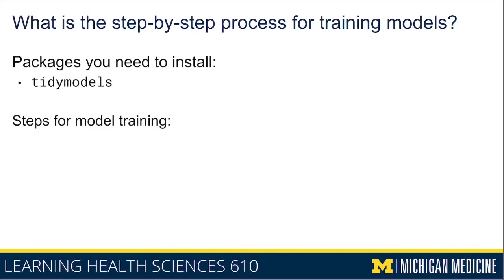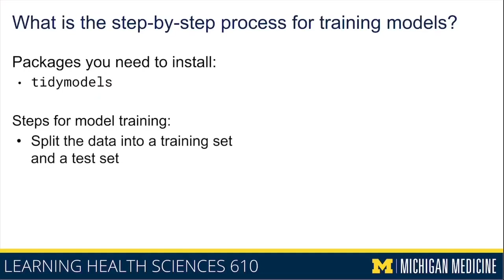So let's go through the steps for training models one by one. The first step is to split your data into a training set and a test set, because we are going to be establishing internal validity. The most simplistic way we'll be doing that is through holdout validation, where we train our model on the training set and evaluate it on the test set, recognizing that there are other ways involving cross-validation and bootstrapping.